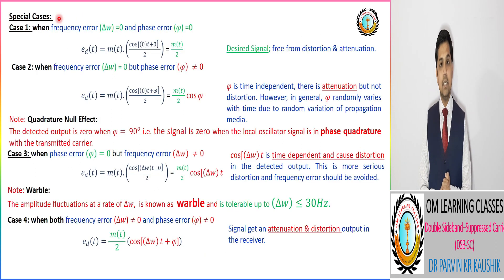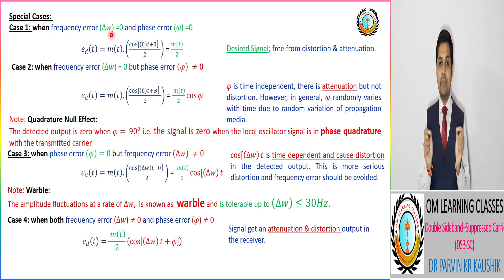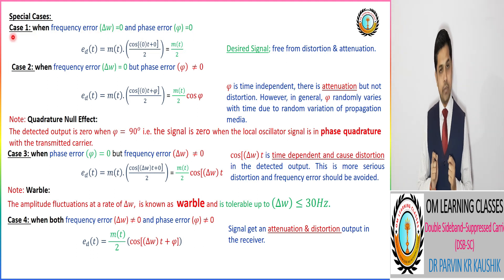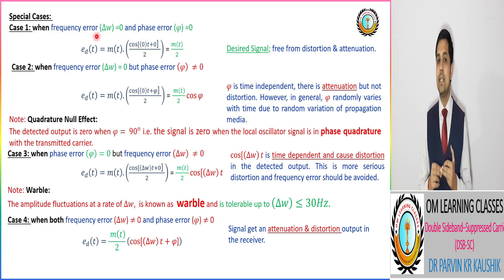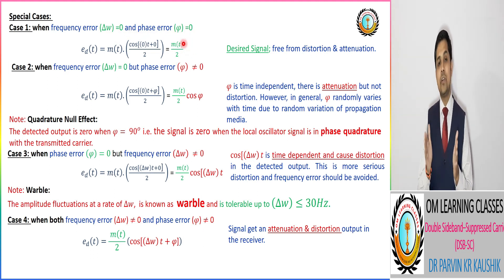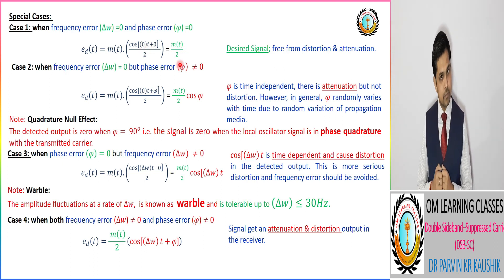In the first special case, we consider that the local oscillator signal is perfectly synchronized with the transmitted carrier wave, meaning there is no frequency error and no phase error. The outcome is our desired signal, which is free from both distortion and attenuation.